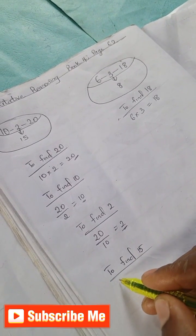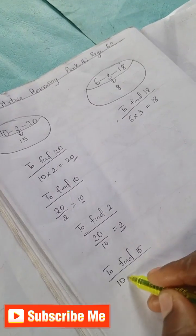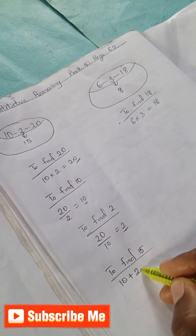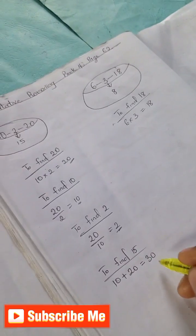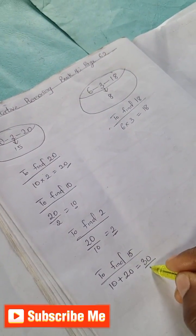So let's go to the next. To find 15, we're going to have 10 plus 20 is 30. That's this 10 plus 20 is 30. 30 divided by 2 is 15.